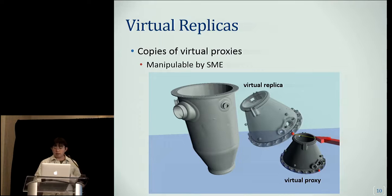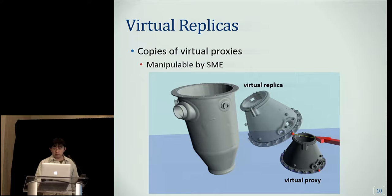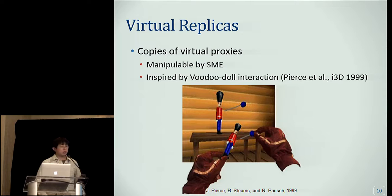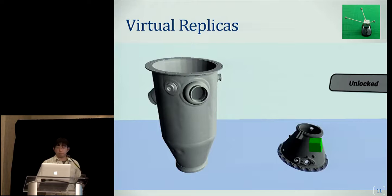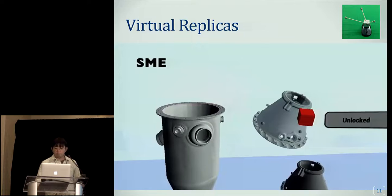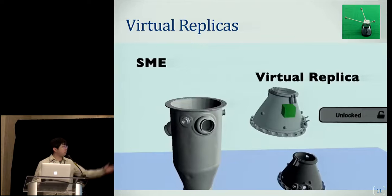Our approach uses something called virtual replicas — copies of virtual proxies that can be manipulated by the SME to show how to align one object relative to another. This concept was inspired by Voodoo Doll interaction by Pierce et al., in which a user creates a copy of a virtual object and operations performed on that copy affect the original. The SME uses a 6-DOF-tracked input device to create a virtual replica by selecting a virtual proxy and grabbing it by pressing a physical button, then can manipulate the replica by gripping and releasing, as you see here.